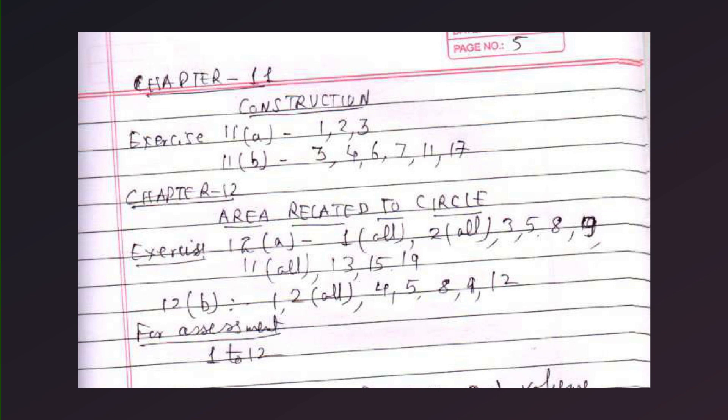Chapter 12, area related to circle. Exercise 12A, 1 all, 2 all, 3, 5, 8, 9, 11 all, 13, 15, and 19. Now 12B, 1, 2 all, 4, 5, 8, 9, 12. For assessment there, 1, 2, 12.